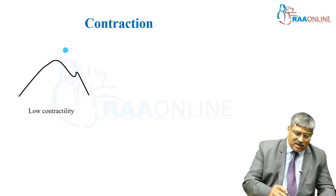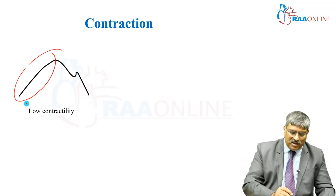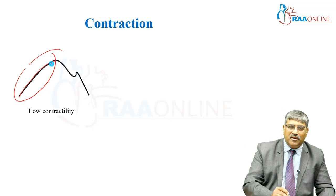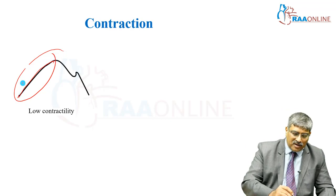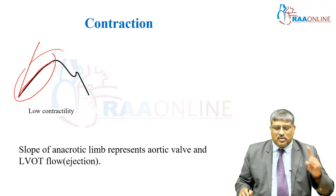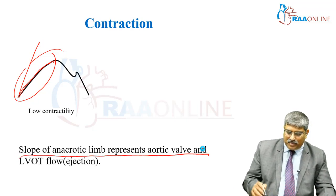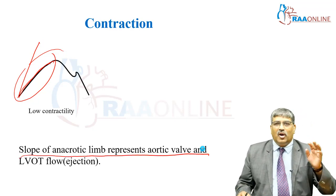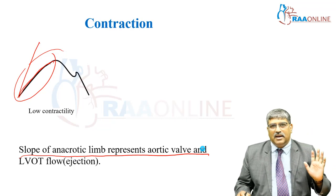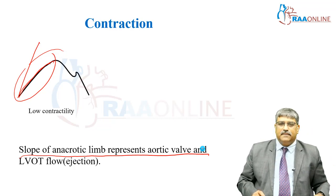If the contractility is low, the slope of the curve moves towards the left. Here you can see the slope is moved towards the left — usually it will be upright, but it is shifted left. So the slope of the anacrotic limb represents aortic valve opening and the LV outflow ejection.